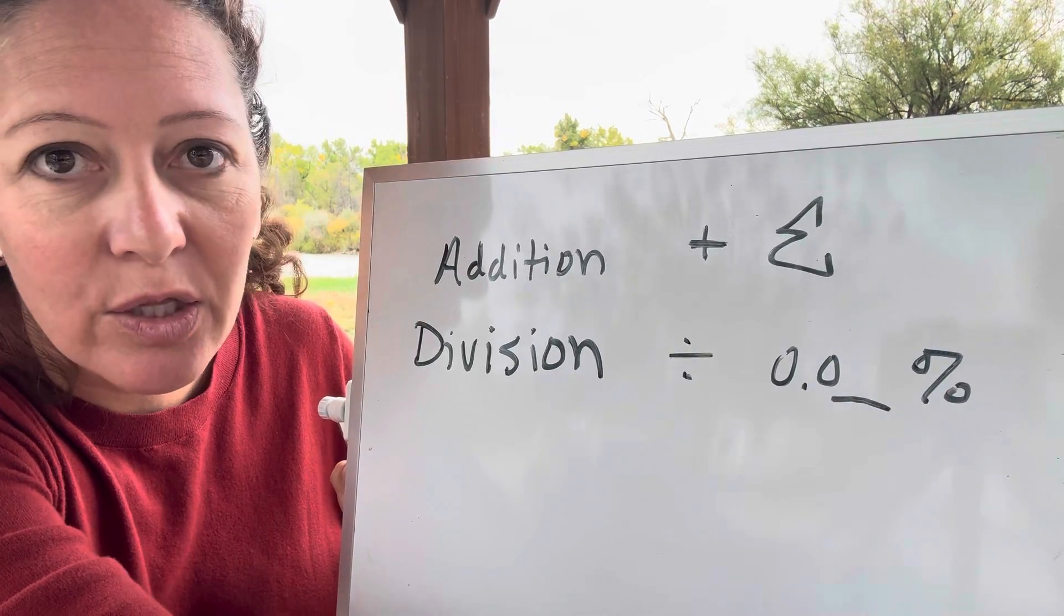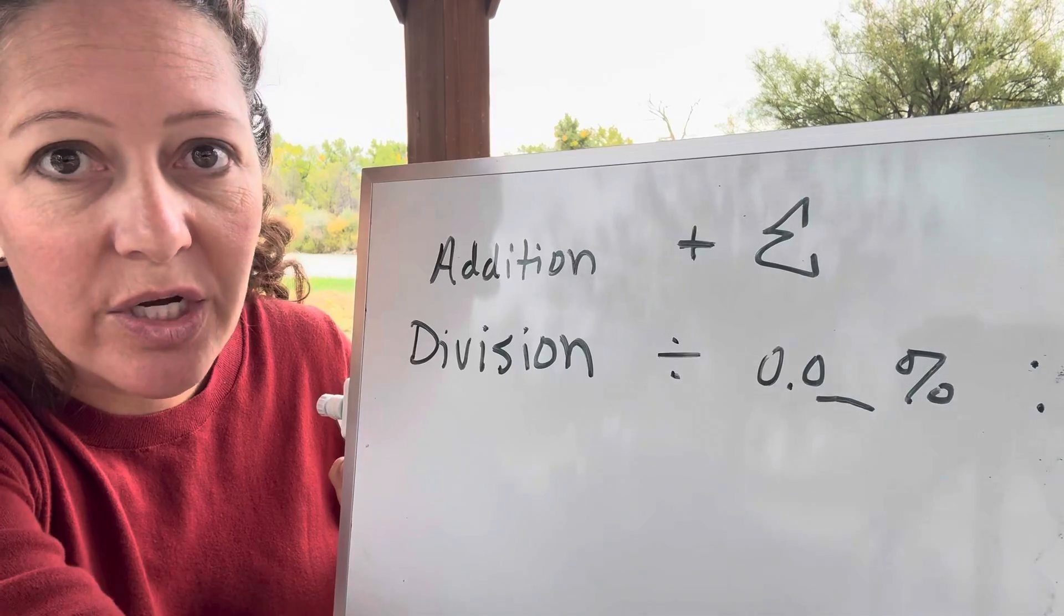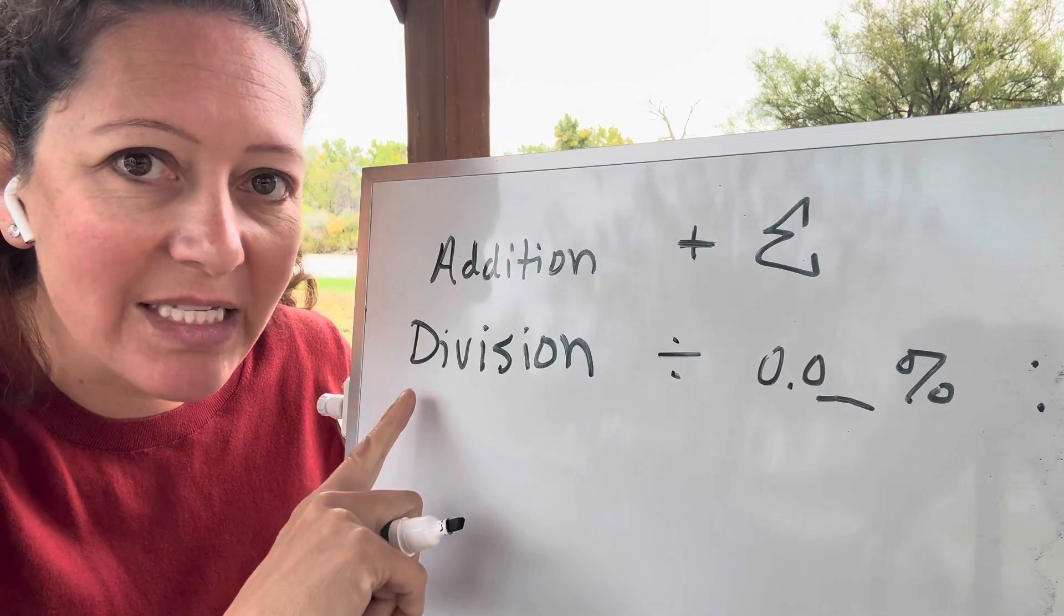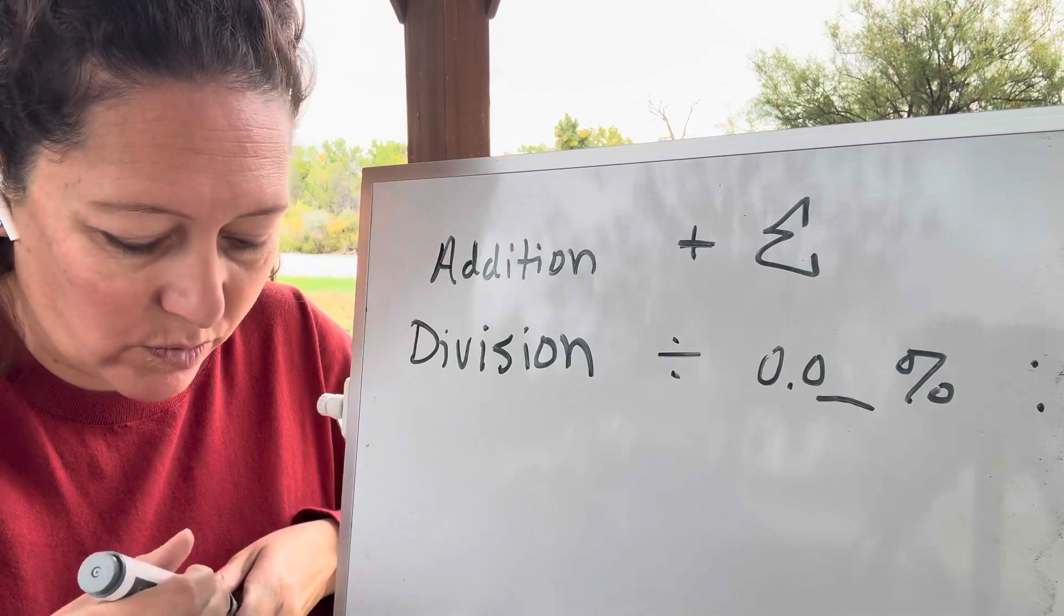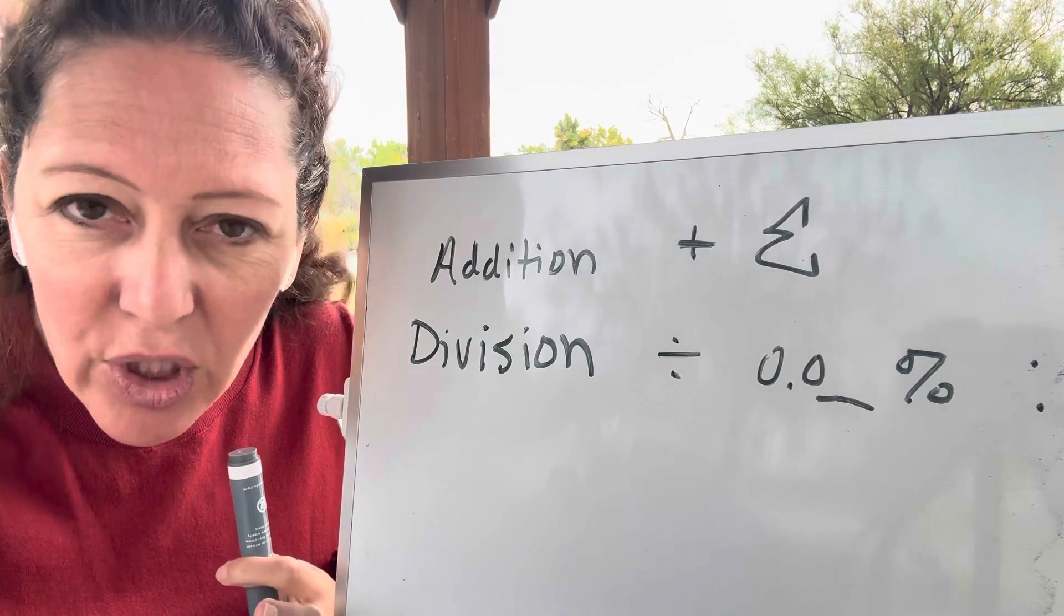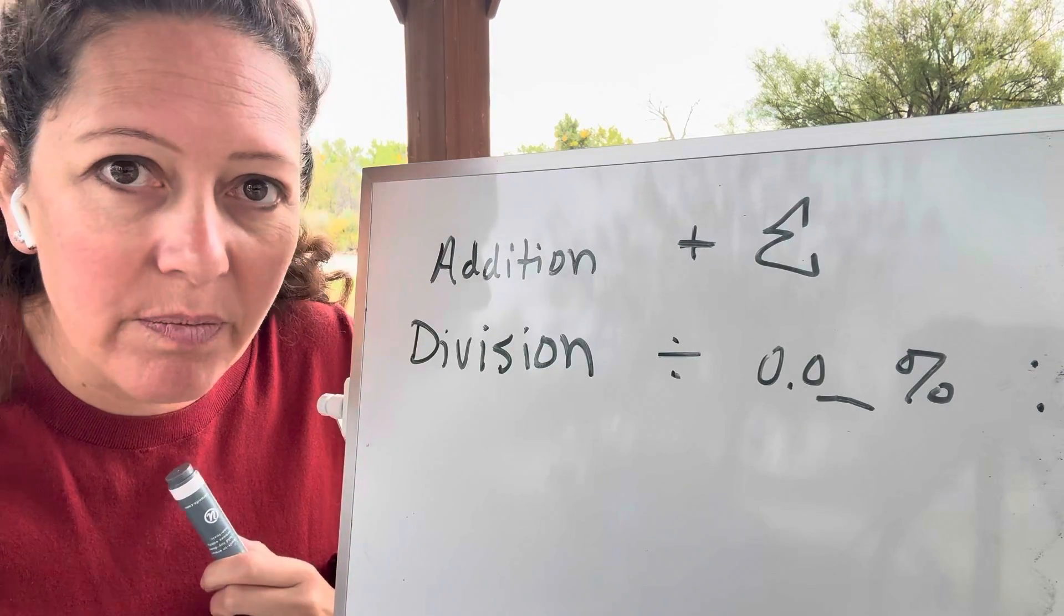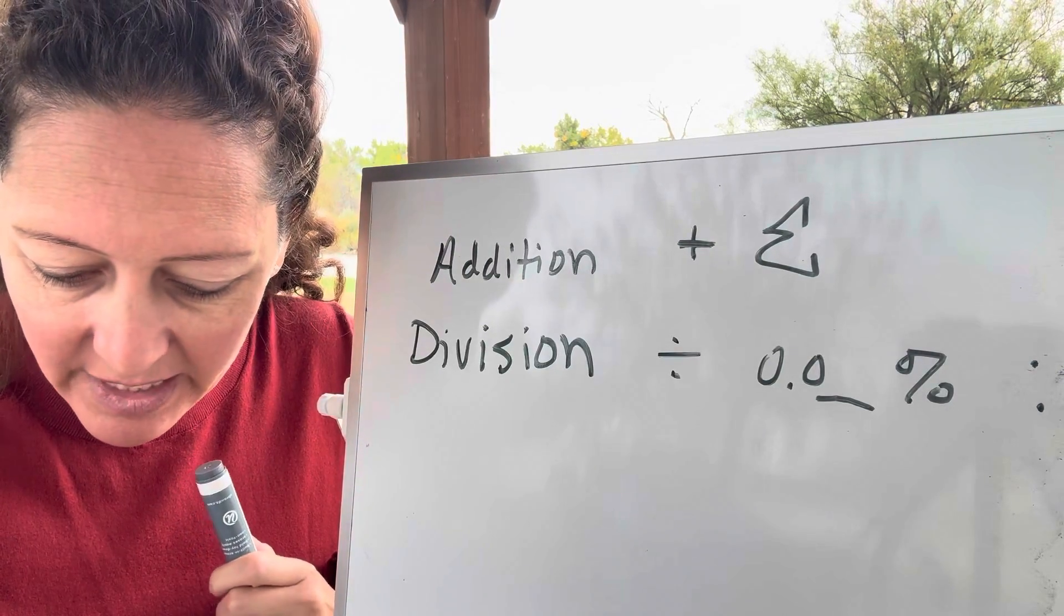Division is when you have decimal amounts. Division includes percents and division includes ratios. So knowing that when you see those different things, what are they actually asking you in terms of the operation? What are they asking you to complete?